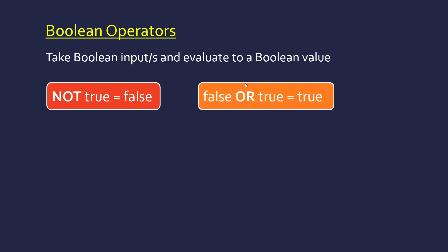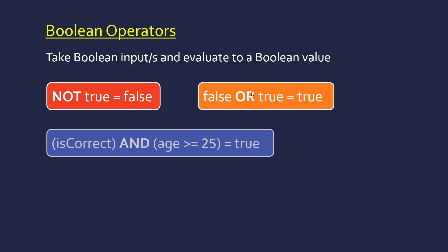So not true just does the opposite. Or, if one of the sides is true, then the output is true. Whereas and, both sides need to be true for the output to be true.